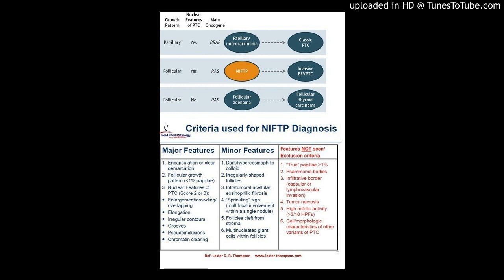Nuclear scoring categories: size and shape — nuclear enlargement, overlapping, crowding, elongation; nuclear membrane irregularities — irregular contours, grooves, pseudo-inclusions; chromatin characteristics — clearing with margination, glassy nuclei.